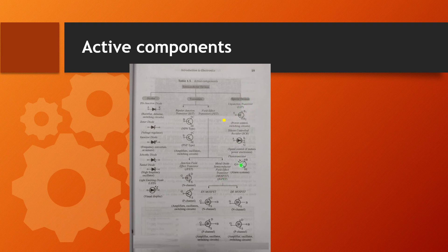Special devices as active components include: unijunction transistor (UJT), silicon controlled rectifier (SCR), DIAC, TRIAC, and photo transistor. These are all classified under special active devices.